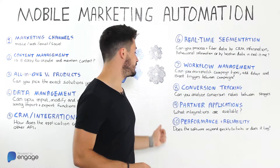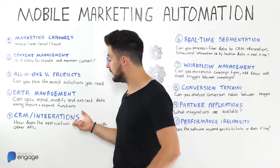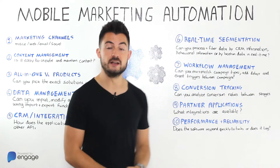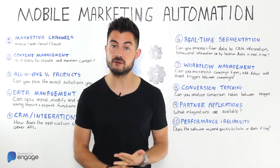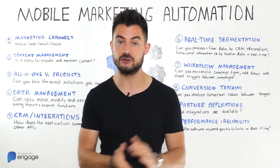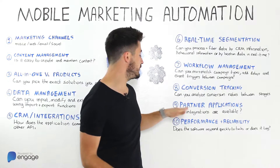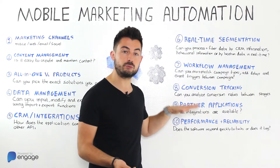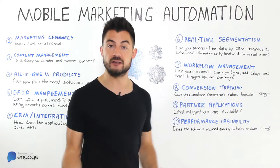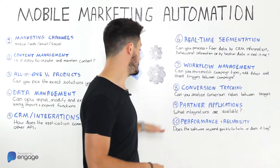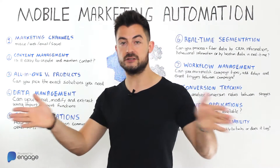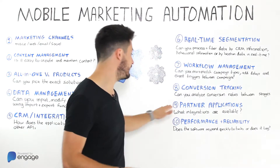Number nine: partner applications. Beyond CRM integration and custom APIs, you need to think about your existing marketing partners — Salesforce Marketing Cloud, Adobe Marketing Cloud, Oracle Marketing Cloud, SAP, and others. Make sure your chosen vendor already has pre-built plugins for these, as well as other APIs like MailChimp, Twilio, and Responsys, so you can easily connect your mobile marketing strategy with the other tools you currently use.